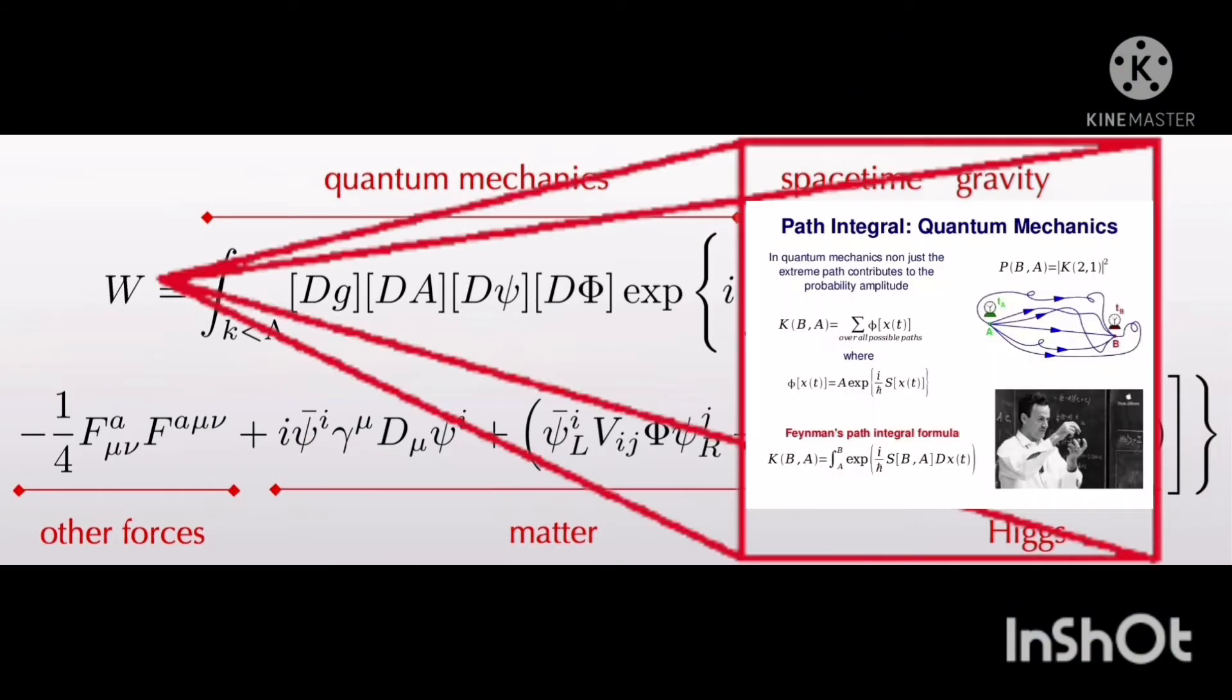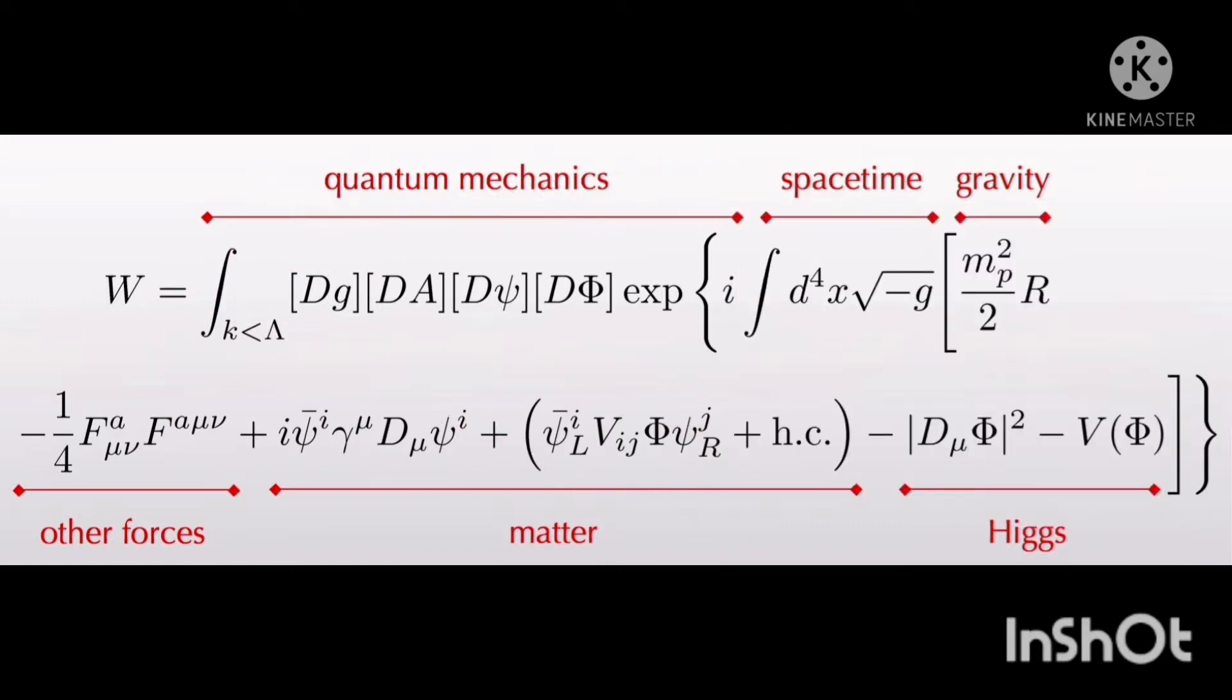W represents the amplitude in the Feynman path integral of quantum mechanics. The integrand symbol represents integrals in calculus. If you have studied calculus, you know that this is the sum of the areas of the infinitesimal region under a curve. Basically, this integral is used to sum up the fields in this equation.